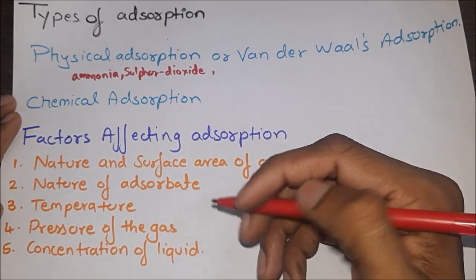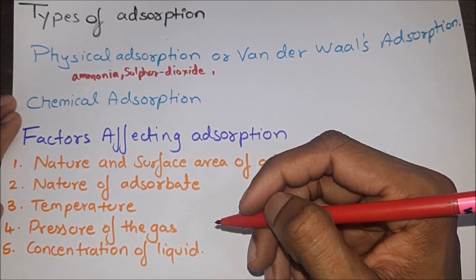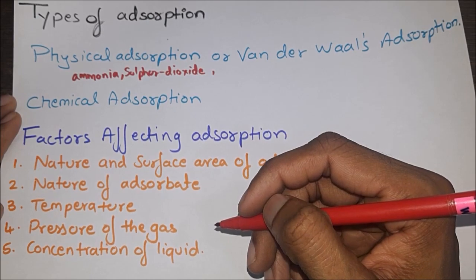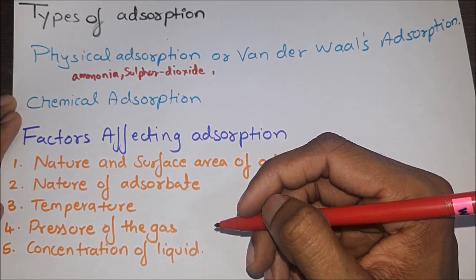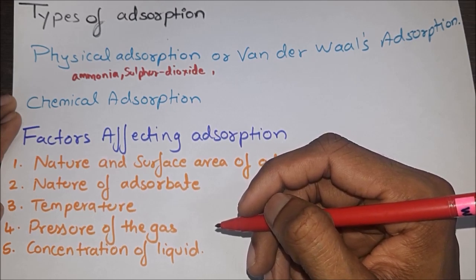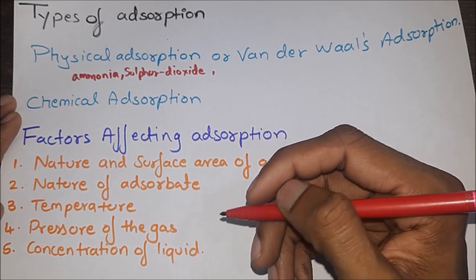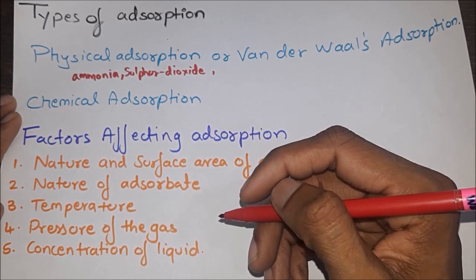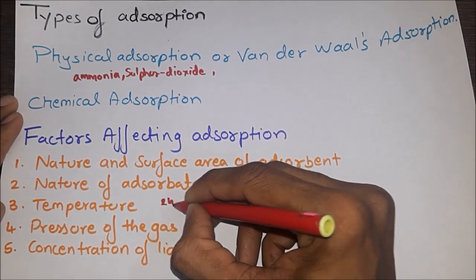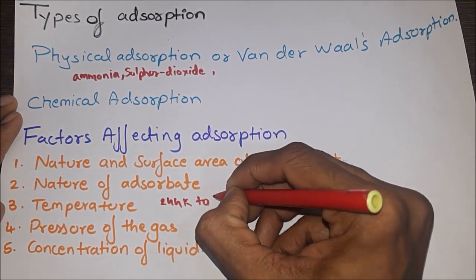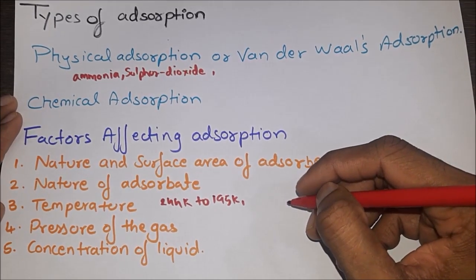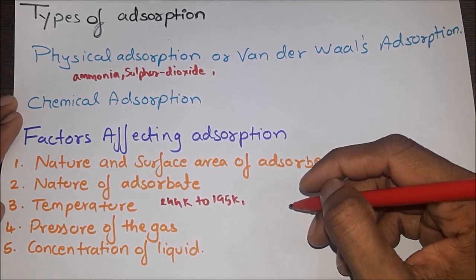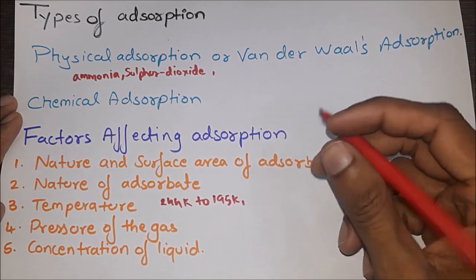This is because the easily liquefied gases have greater van der Waals forces of attraction. Third, temperature — applicable for both liquid and gaseous adsorbates. Adsorption is an exothermic process; it takes place with evolution of heat. Thus adsorption decreases with increase in temperature. At low temperature, the extent of adsorption is more. For example, if the temperature of coconut charcoal is lowered from 244 K to 195 K, the amount of nitrogen gas adsorbed increased from 20 cm³ to 45 cm³ under the same pressure.